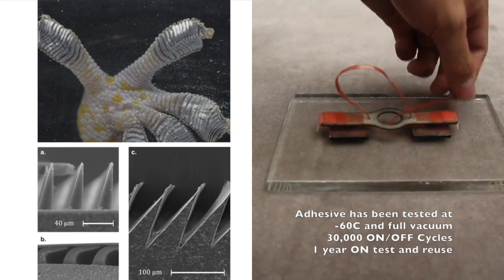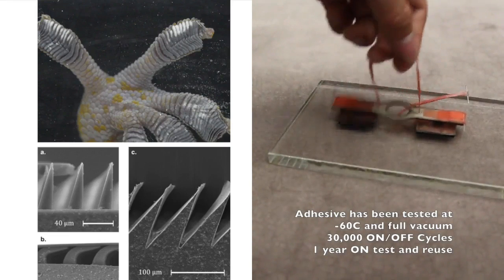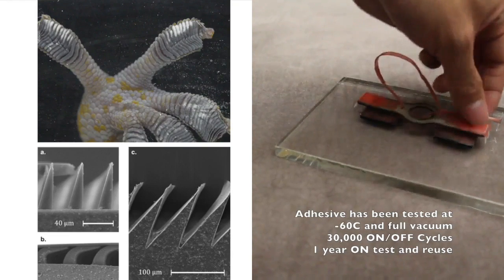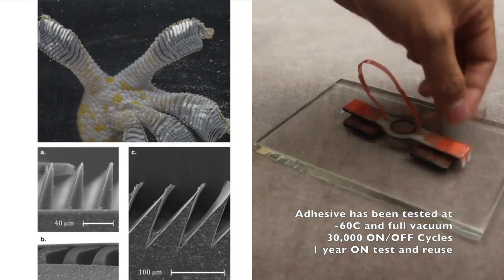At Stanford and JPL, we have learned from gecko lizards to make small adhesive grippers that adhere to smooth surfaces such as solar panels and fuel tanks with little attachment and detachment effort. This is a nice solution for grappling and releasing free-floating objects.